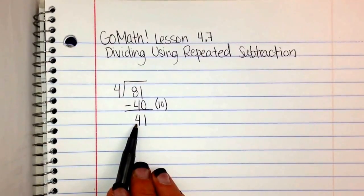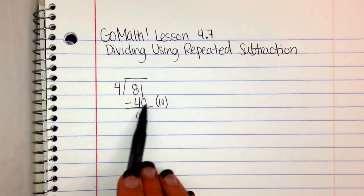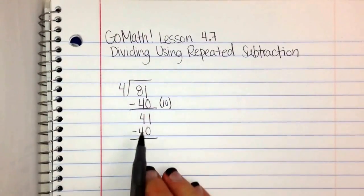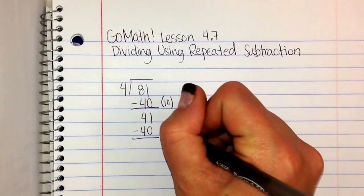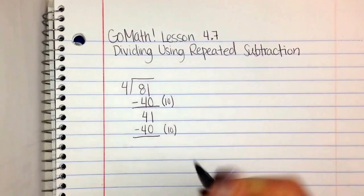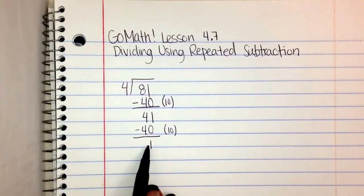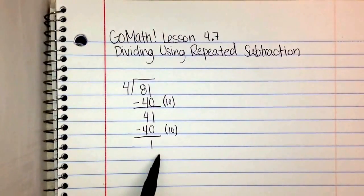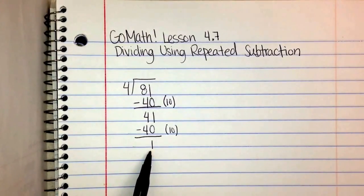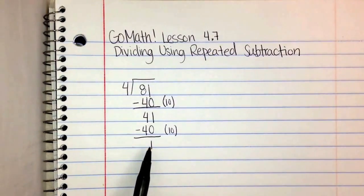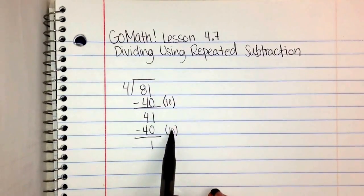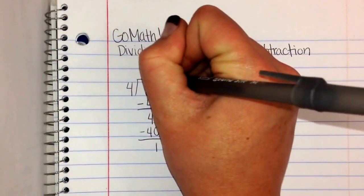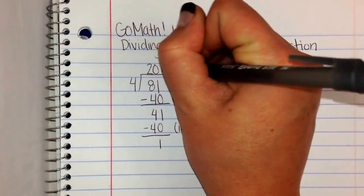Remember, I'm trying to get to 0, so I'm going to do it again. My easy multiple is 40. I can do that again because I have 41, so I take away 40 and write 10 in parentheses to the side to show there are 10 fours in 40. I'm left with 1. Now I look at this — I can't take away even one 4 from 1, so this is my remainder. I count my 4's from the side: 10 plus 10 equals 20. Therefore, my answer is 20 with a remainder of 1.